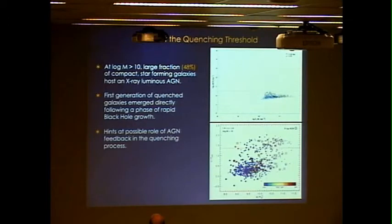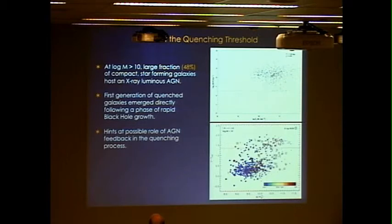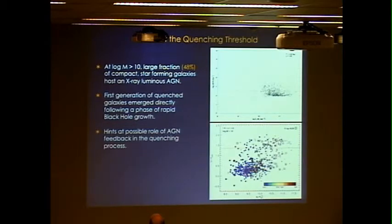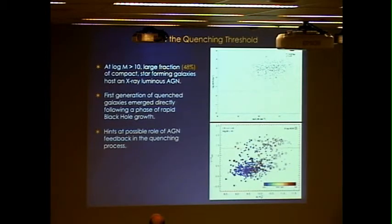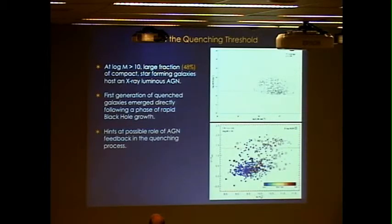I want to hint at the possible role of AGN quenching in this phase. I should point out that in Joel's simulations, this quenching is going on without AGN feedback — it's just star formation shutting itself off. So the picture may be more complex than a simple quasar blowout mode. In fact, it could be that the AGN here are simply preventing any further gas from coalescing out of these systems and keeping them cool.